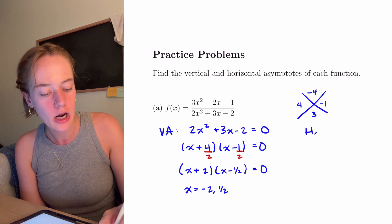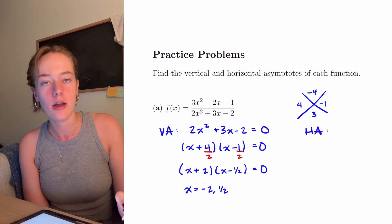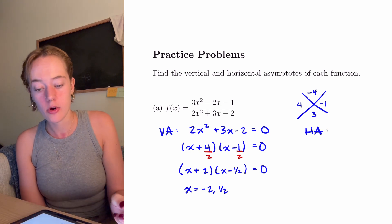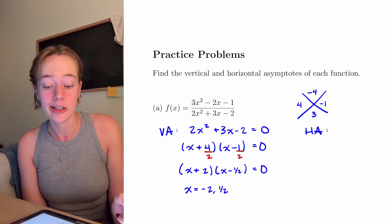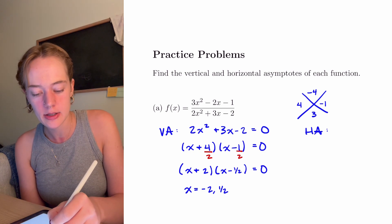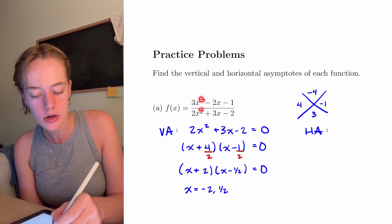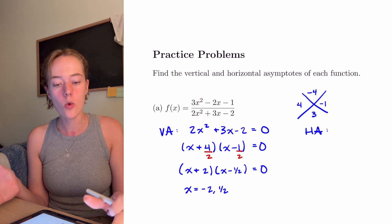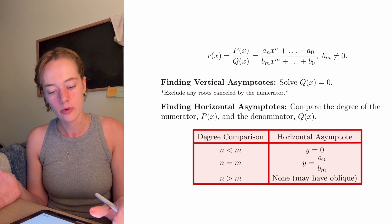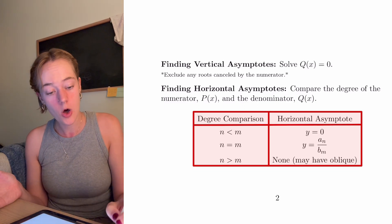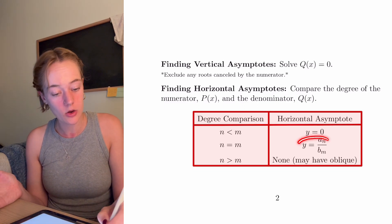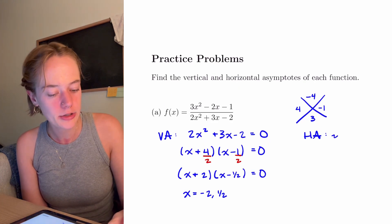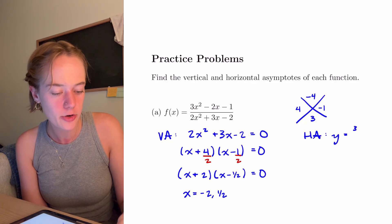For the horizontal asymptote, we compare the degree of the numerator to the degree of the denominator. Both the numerator and denominator have degree 2. When the degrees are equal, we take the coefficients of the leading terms and divide them, giving us the horizontal asymptote y is equal to 3 over 2.